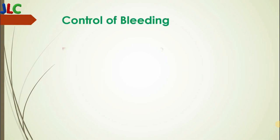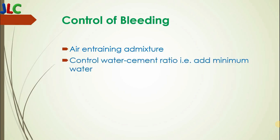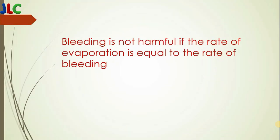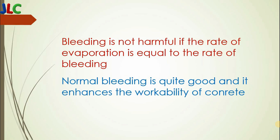Control of bleeding: Air entraining admixtures can be used. The water-cement ratio should be controlled, using a minimum amount of water. Bleeding is not harmful if the rate of evaporation is equal to the rate of bleeding. Normal bleeding is quick and it enhances workability — that is, it makes the concrete easier to place and lay, reduces friction, and there is not much problem in laying the concrete.